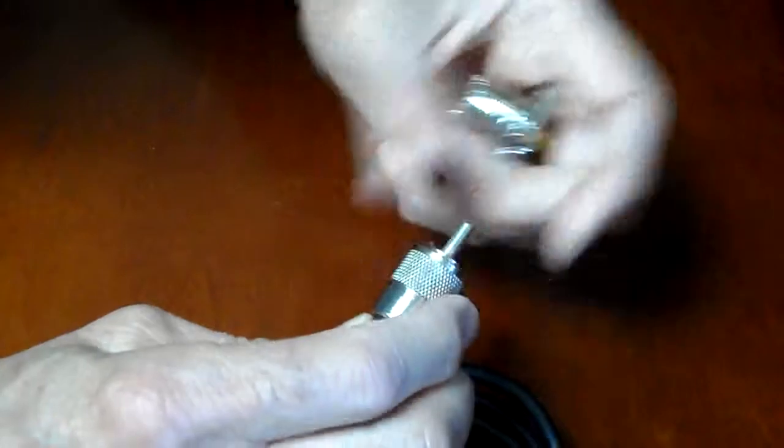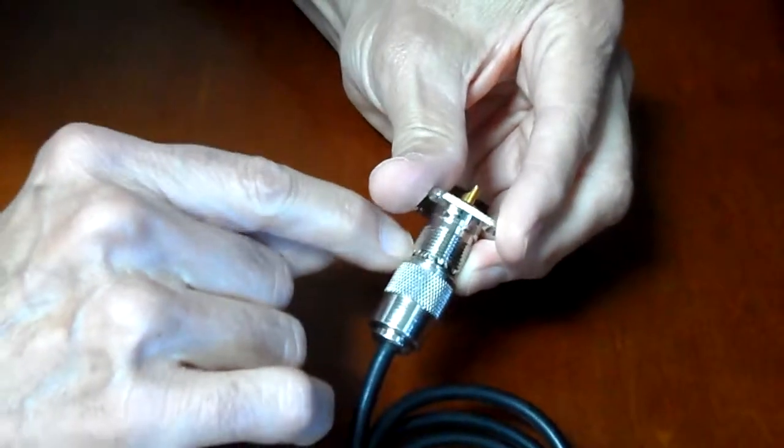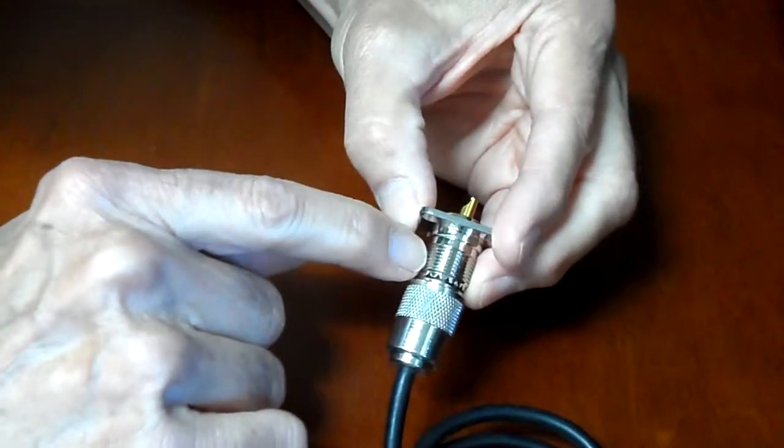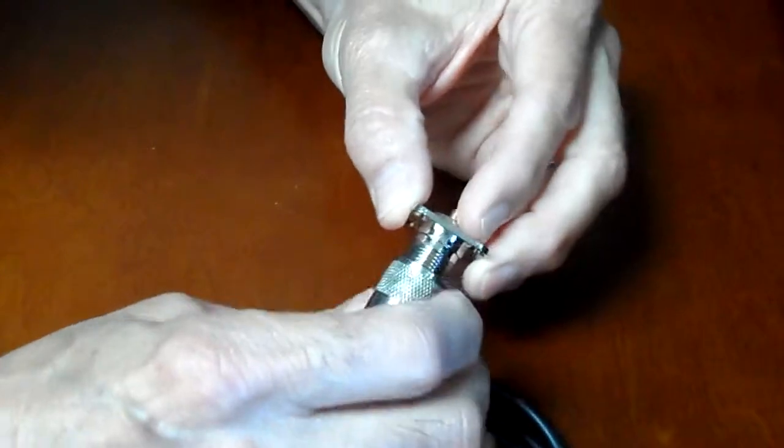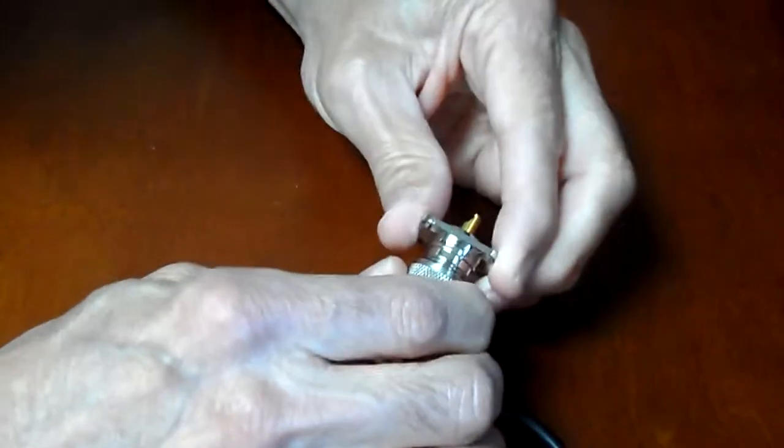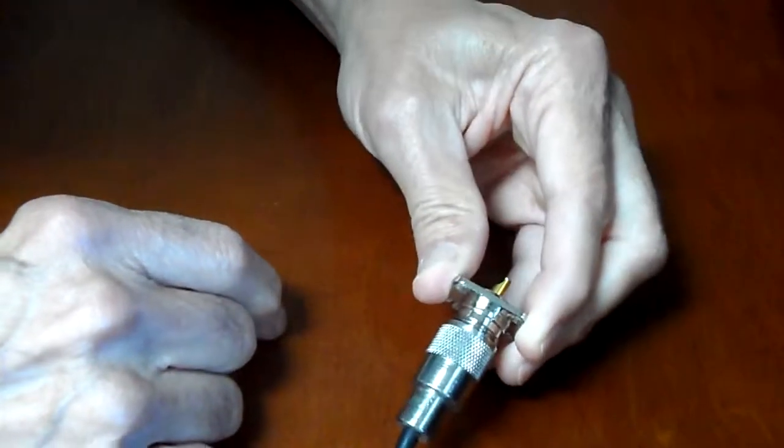Now when you connect it, first you want to push it in and make sure that it's completely seated all the way down, so you have a connection between both connectors right here. Now when you thread the collar on, you do that by hand. You can put a good, strong turn on it. You shouldn't need any tools.